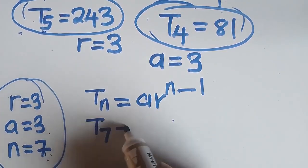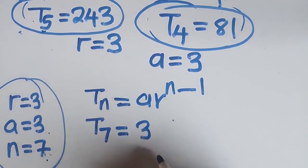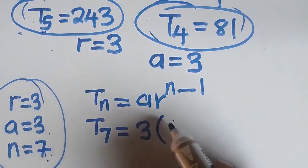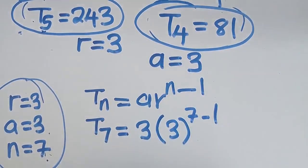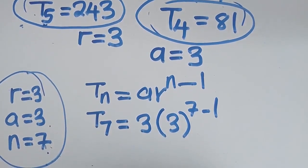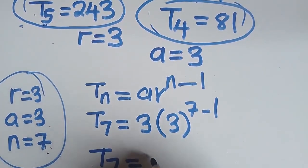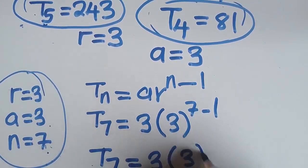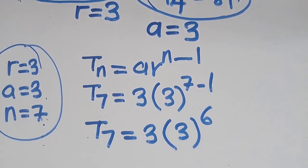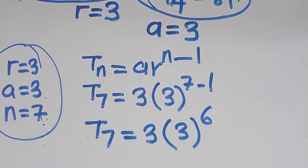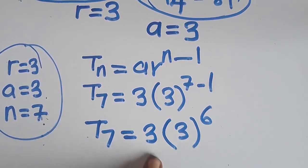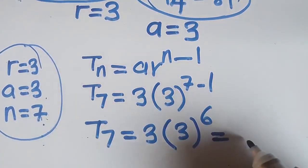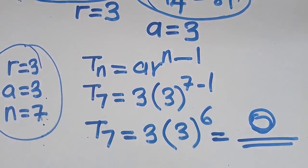So T7 is equal to 3 times 3 to the power of 7 minus 1, which is 3 times 3 to the power of 6. Complete this on your calculator to find the answer.